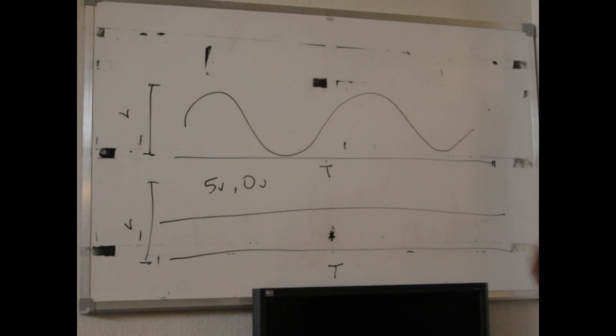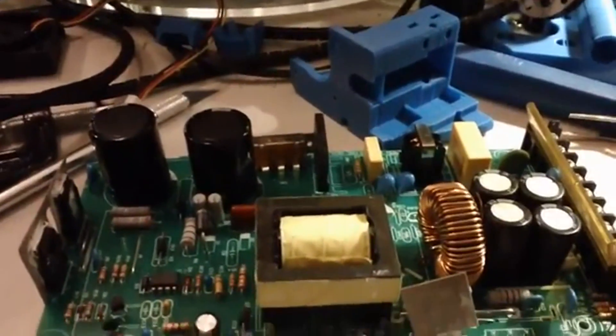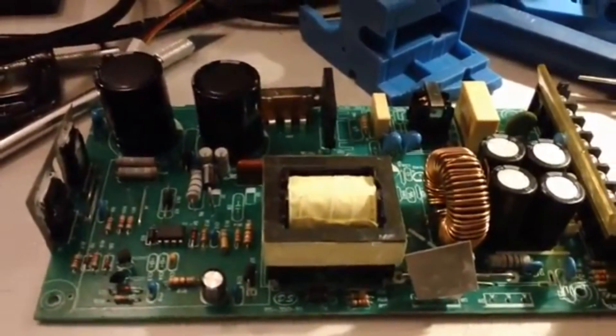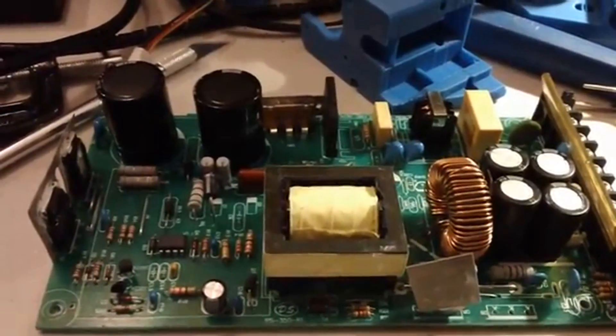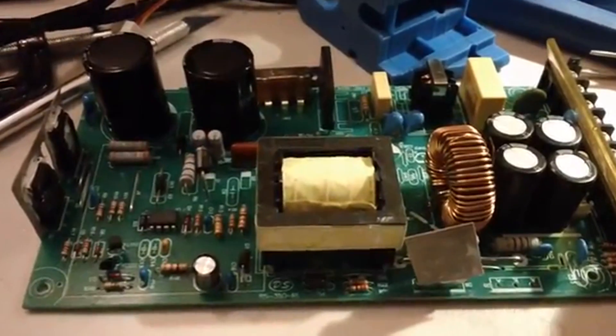So why do we have the two different types of waveforms? Direct current you'll find more synonymous with small-scale electronics. A lot of things in your home, electricity when it runs over circuit boards is typically going to be DC or direct current.